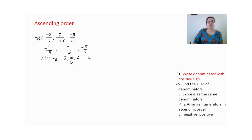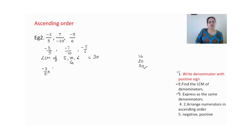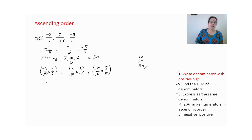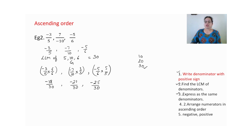The greater number is 10, so recite the table of 10. 10 — not in 6. 20 — not in 6. 30 — in 5, 10, and 6. So LCM is 30. Next step: write all rational numbers with the same denominator. Minus 3 by 5 — multiply by 6 by 6. Minus 7 by 10 — multiply by 3 by 3. Last, 5 upon 6 — multiply by 5 by 5. You get minus 18 upon 30, minus 21 upon 30, and minus 25 upon 30.